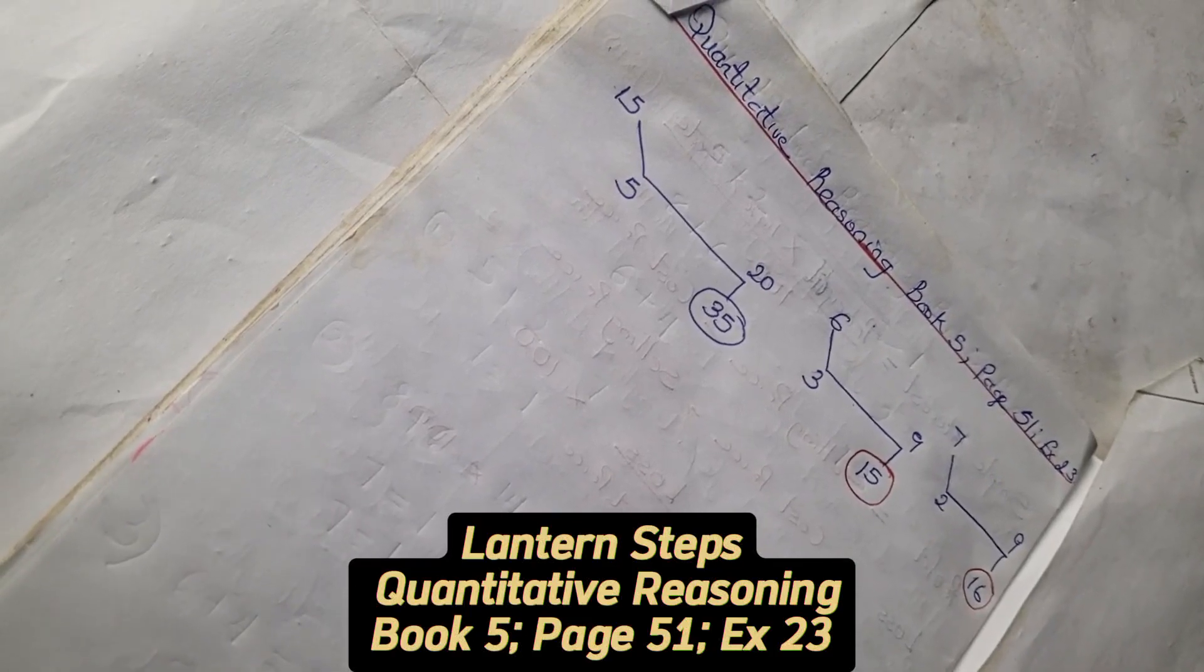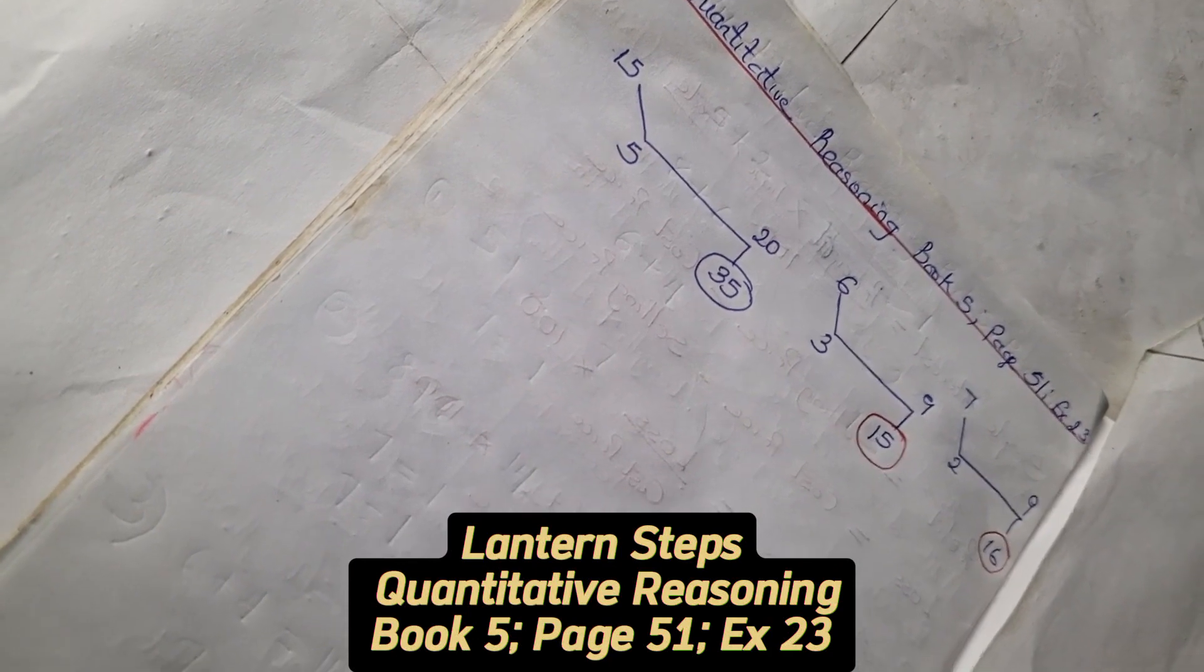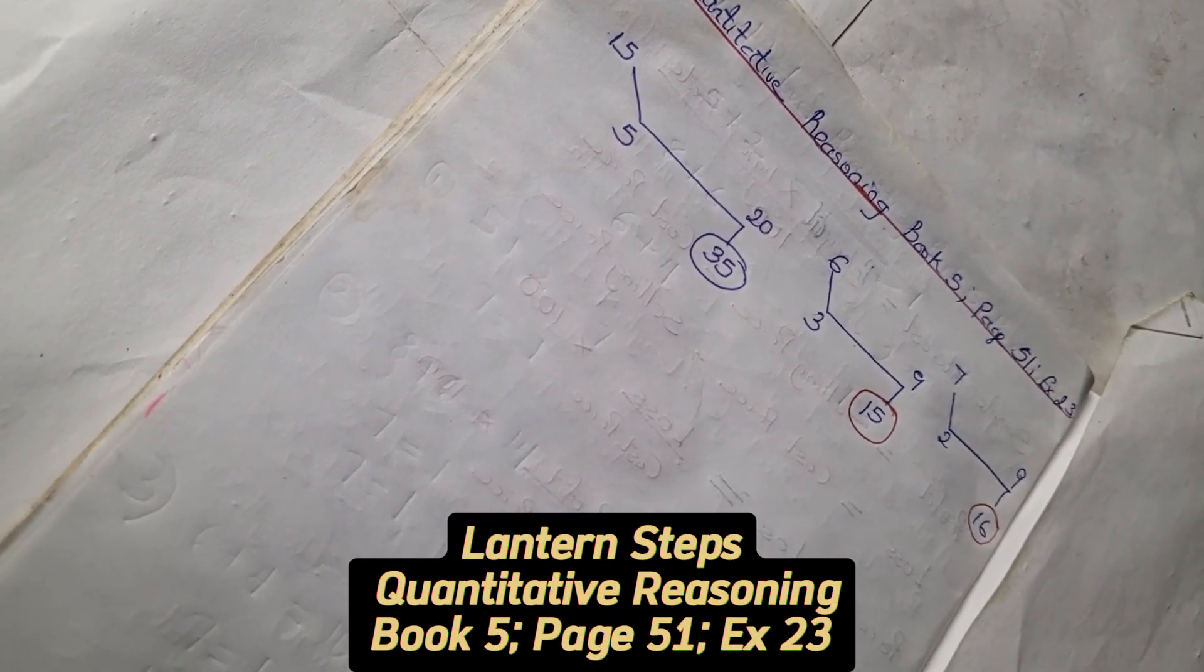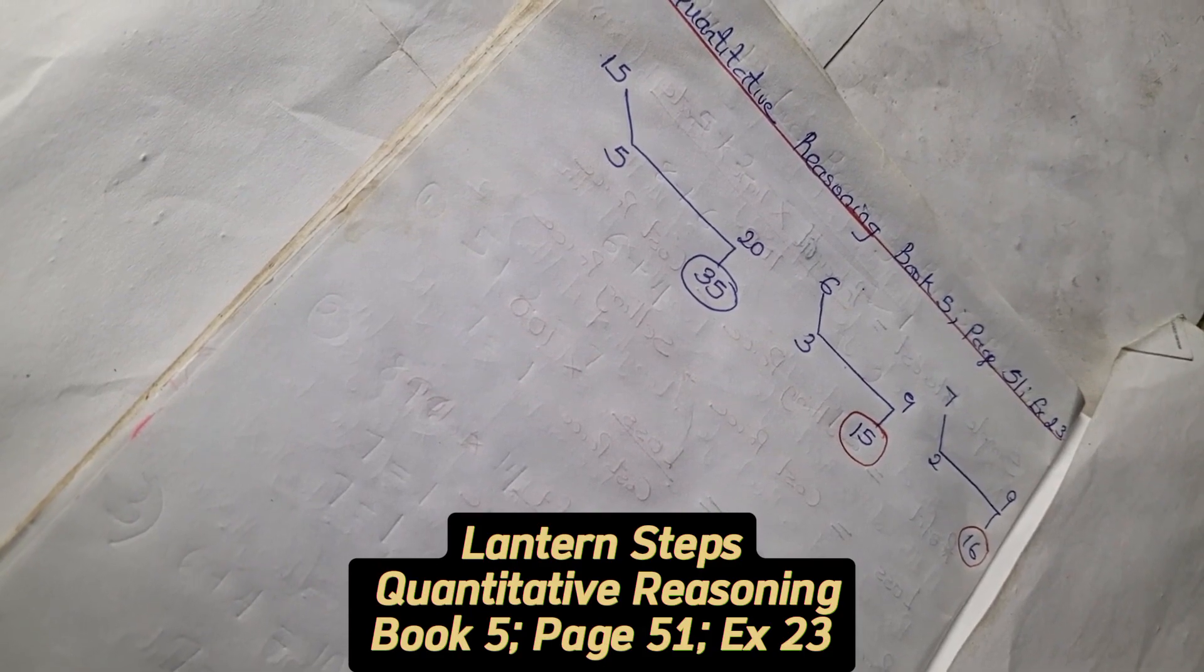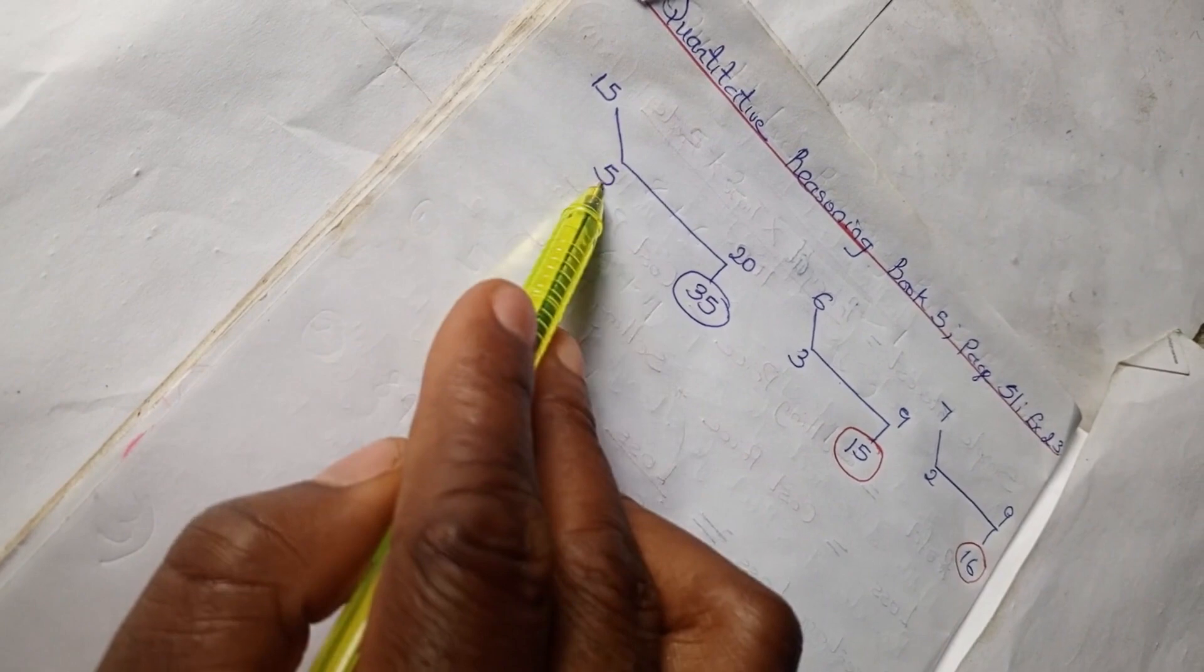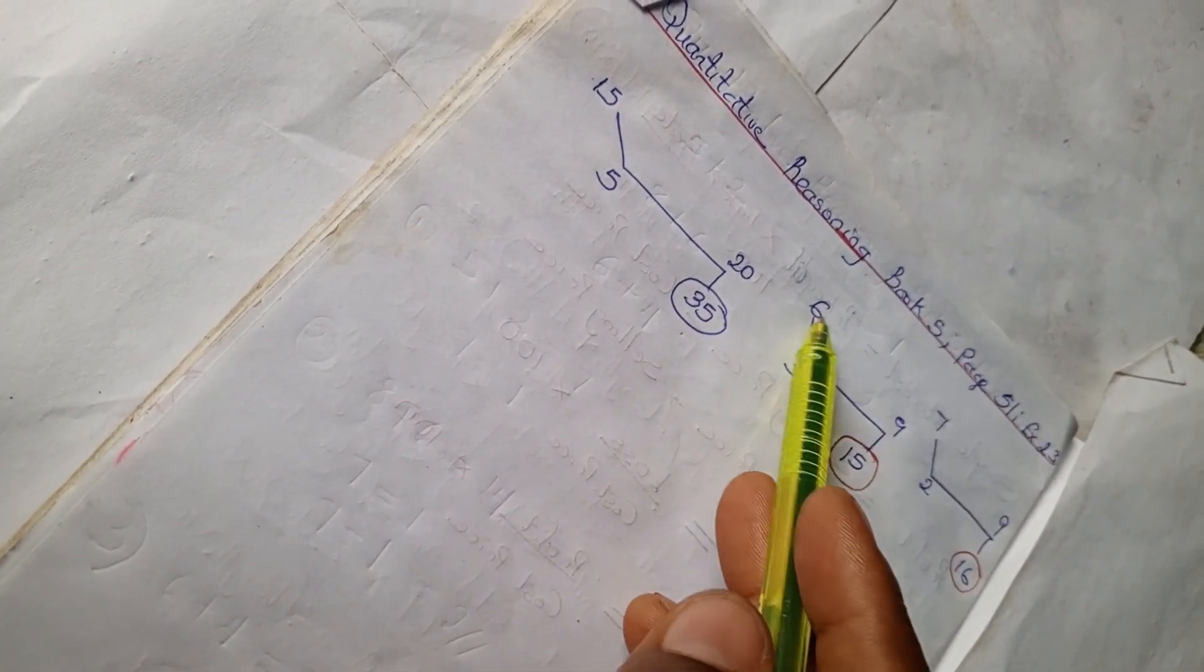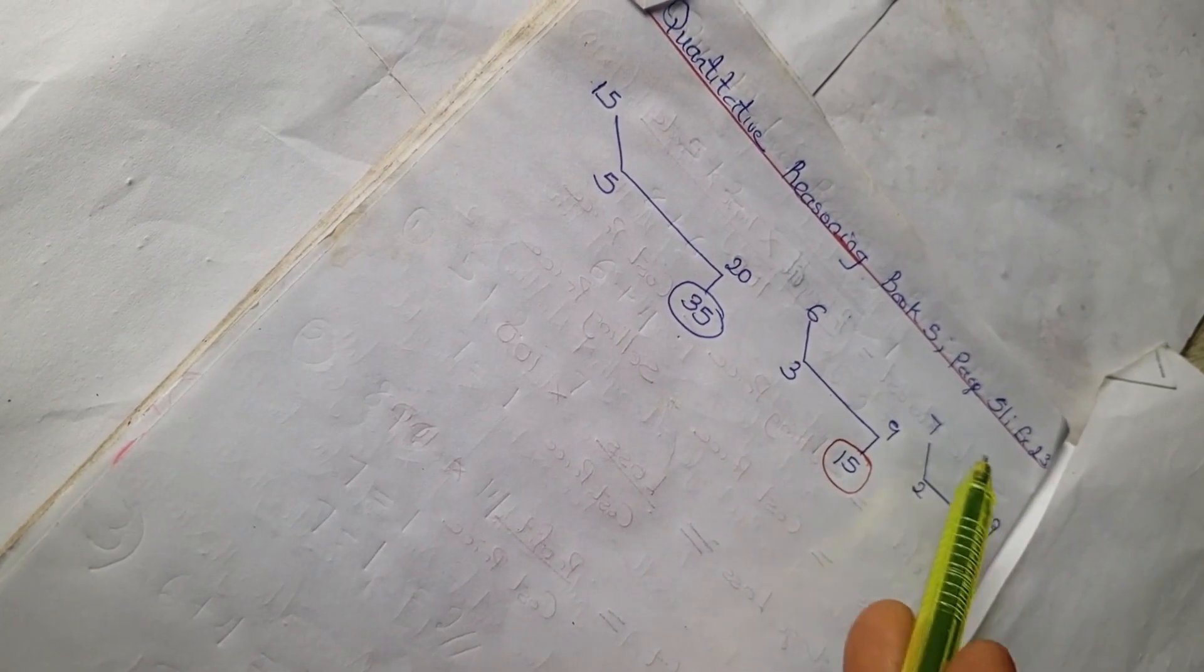Welcome to quantitative reasoning solution section. We have book 5 of Lantern Quantitative, page 51, exercise 23. Looking at this problem: 15, 5, 20, 35 is example 1. Example 2: 6, 3, 9, 15. Example 3: 7, 2, 9, and 16.